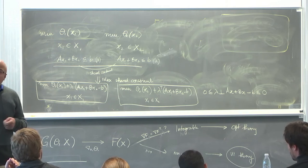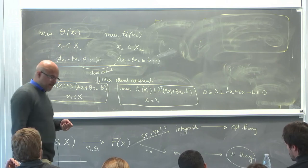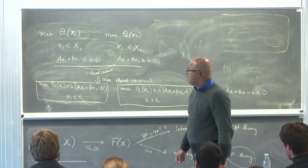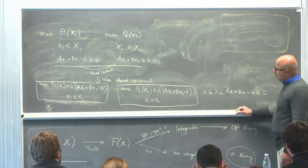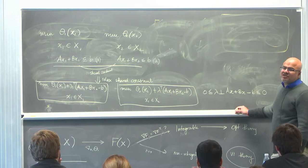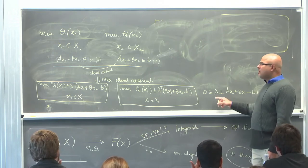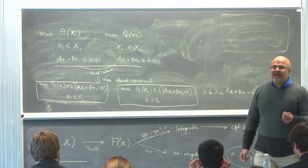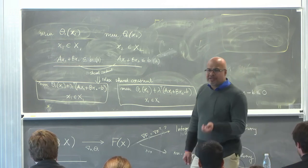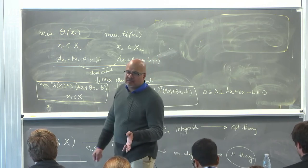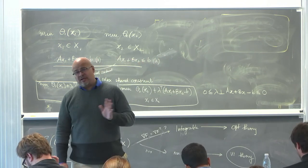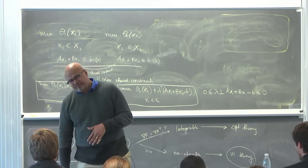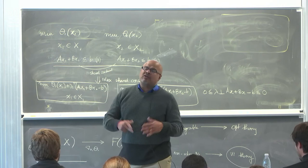Lambda is expressing the sensitivity of the objective to a change in the boundary of that constraint. Because it's a shared constraint, we're looking for solutions where lambda1 equals lambda2. That class of problems is a little easier. There are problems where lambda1 cannot equal lambda2—the non-common multiplier setting.